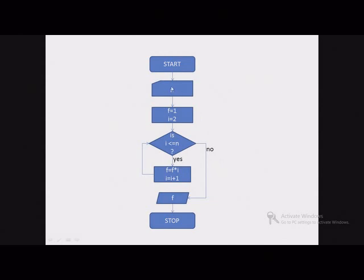First, we input the value of n. We set variable f to 1 and variable i to 2. Then the expression 'i less than or equal to n' is evaluated — it can be either true or false. If it evaluates to true, f will be multiplied by i. The first value of f is 1, so 1 multiplied by 2 equals 2, which is stored as the new value of f. Then i plus 1, which is 3, is stored as the value of i, and control is transferred back to the condition.